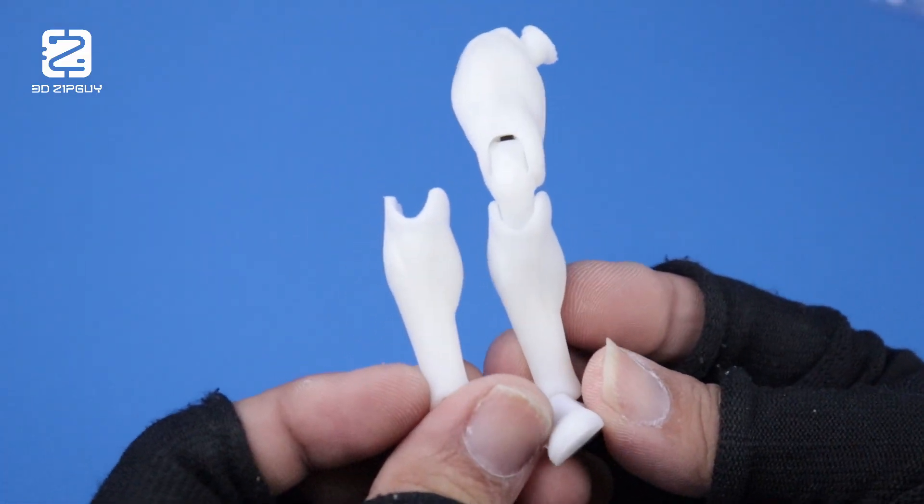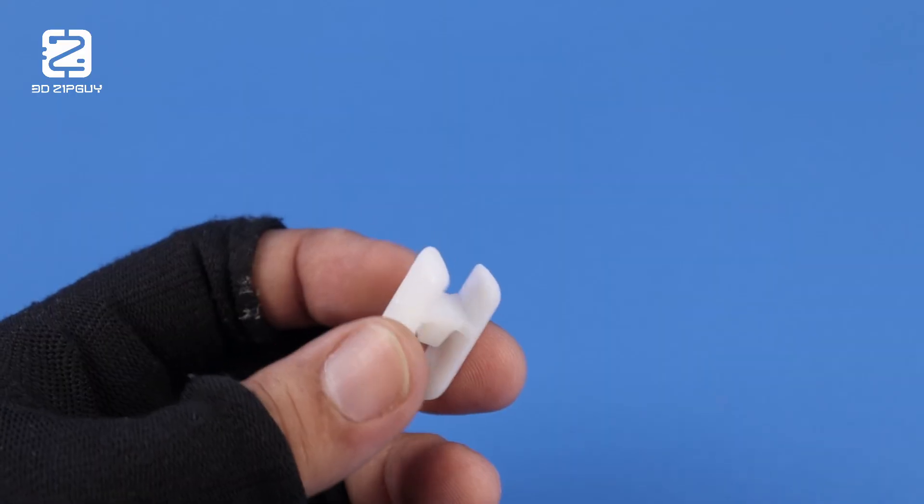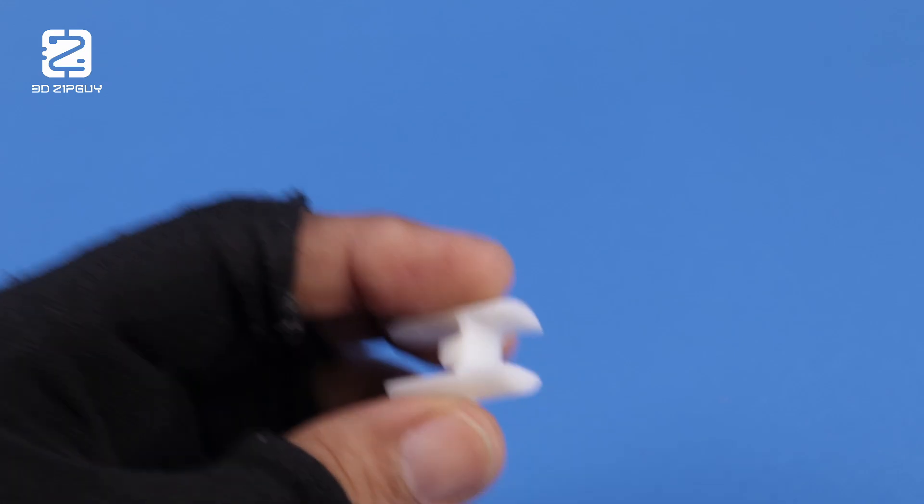Yikes. Remember when I said I messed up the order? Well, here it is. I accidentally ordered two right lower legs and the elbow peg came out at the wrong scale, so I'll have to improvise.